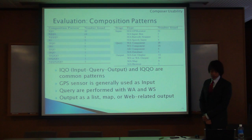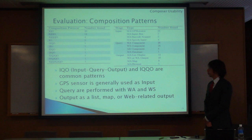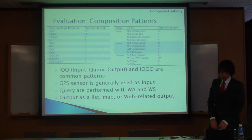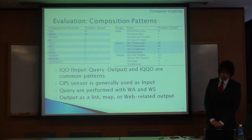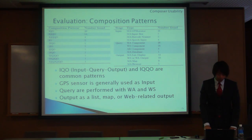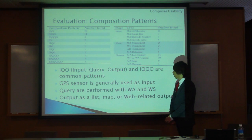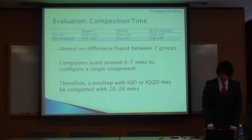Regarding composition patterns, one pattern composers use is IQO — improve query output — one component at a time, and IQQO are our common patterns. We found two common patterns for most-used components: the GPS sensor is generally used as input, queries are performed with web applications and web services, and the output commonly found is a list, a map, or a web-related output such as an HTML document or web service message.